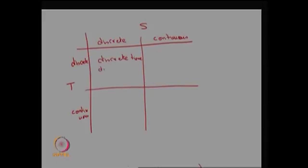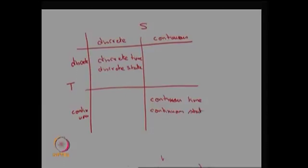If T is discrete and S is continuous, it is a discrete-time continuous-state stochastic process. If T is continuous and S is discrete, it is a continuous-time discrete-state stochastic process. In general, based on the possible values of capital T and capital S, any stochastic process can be classified into four types: discrete-discrete, discrete-continuous, continuous-discrete, or continuous-continuous, based on time and state space.